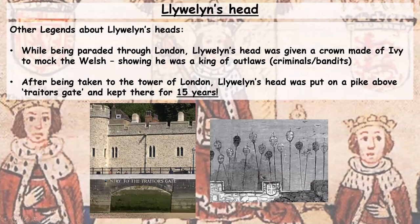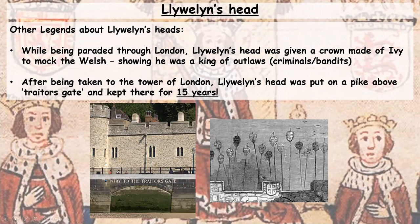Now that you've completed that task, there are other legends — tales or stories that may or may not be true — about Llewellyn's head. The first is that while being paraded through London, Llewellyn's head was given a crown made of ivy. This mocked the Welsh, showing that Llewellyn had been a king of outlaws, criminals, and bandits.